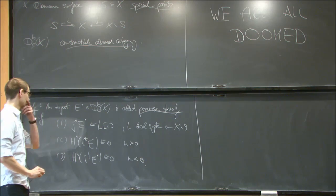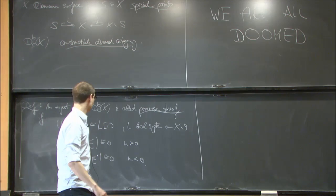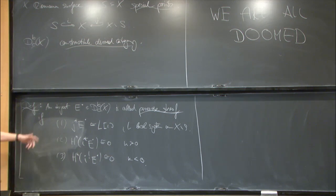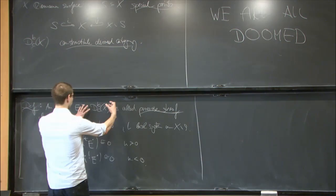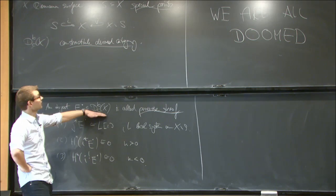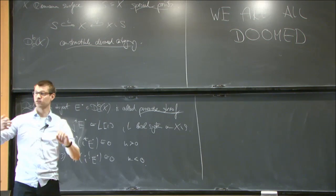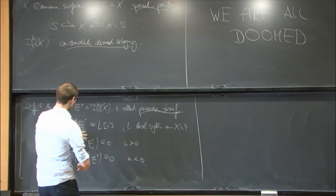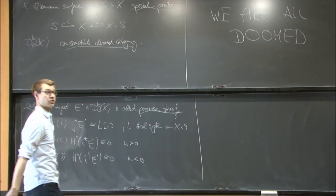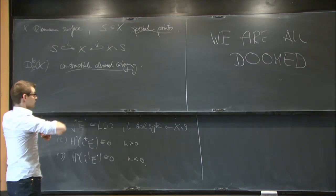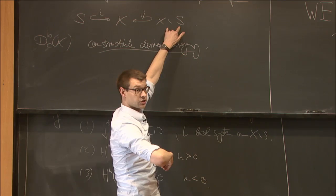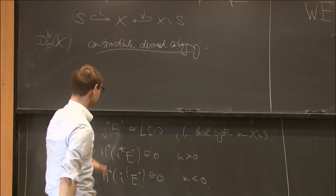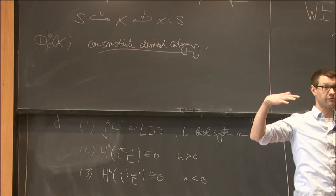So this is the definition of a perverse sheaf. One way to look at it: there is a standard way of producing t-structures on such a constructible derived category given a decomposition into open and closed, by specifying a t-structure on the derived category of the open part and also on the closed part, and then there's a recollement procedure which glues these two t-structures together. This category is precisely the heart of a t-structure obtained by taking the standard t-structures and shifting the local system part up by one, then gluing them back together.